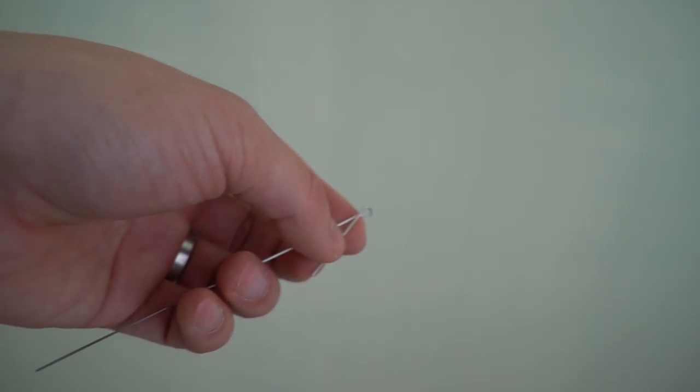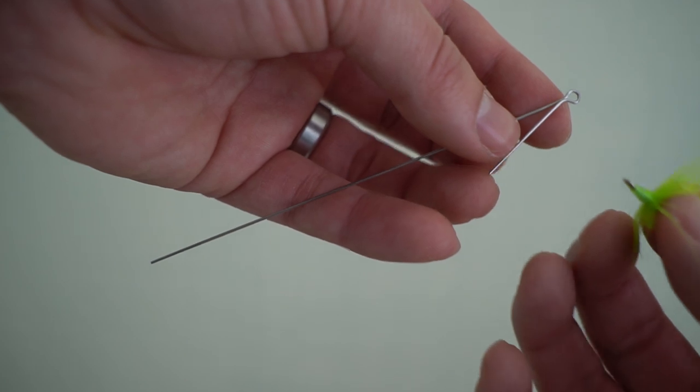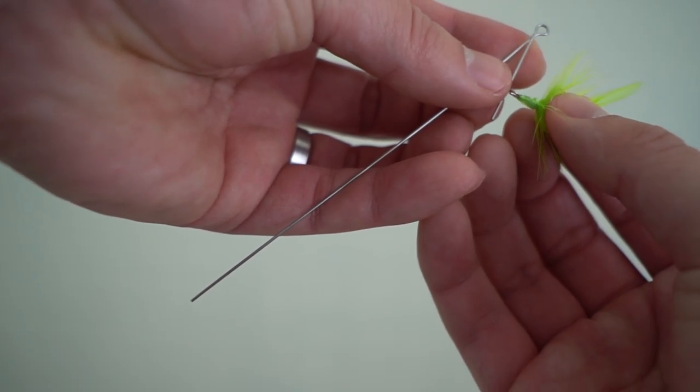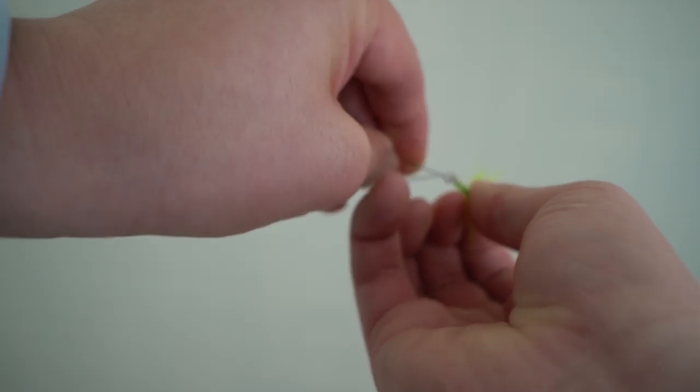So, next step is, we take a hook. We slide a hook all the way through. There we go. And, that's our tail right there.